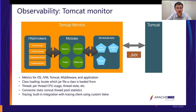These stats include metrics at every level, including operating system, JVM, Tomcat, middleware, and the application itself. We can also use Tomcat Monitor to view class loading stats. For example, we can locate which JAR file a class is loaded from, which is very useful when you want to find out where a Java class originates. We can also identify which JAR files have never been loaded, which is useful for simplifying and trimming your application.